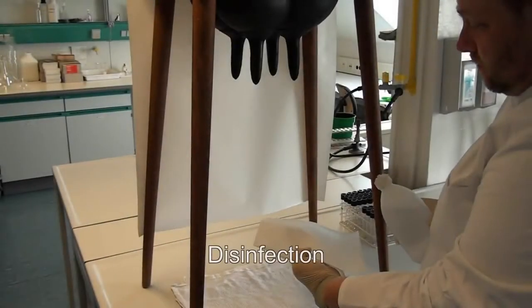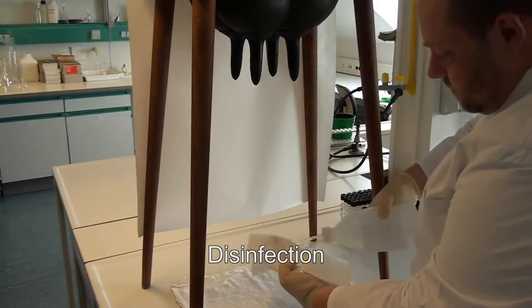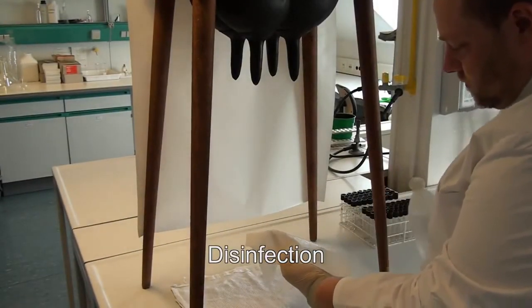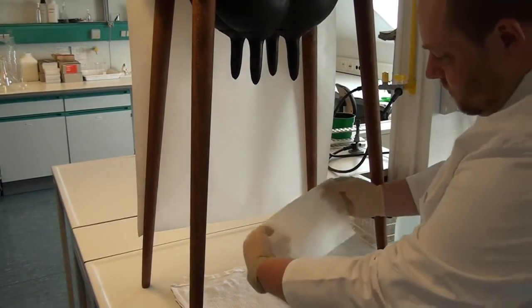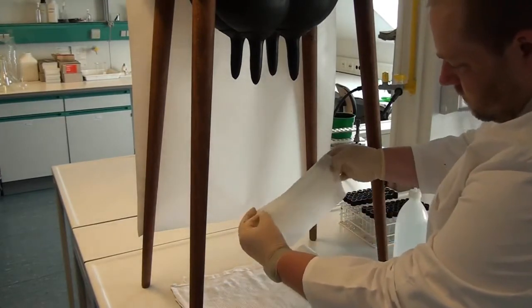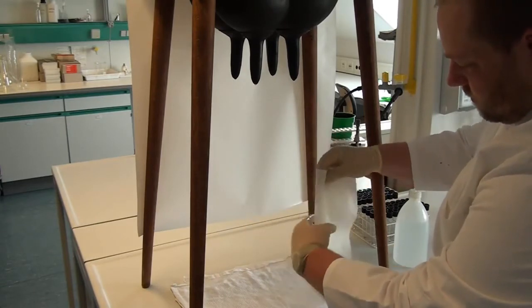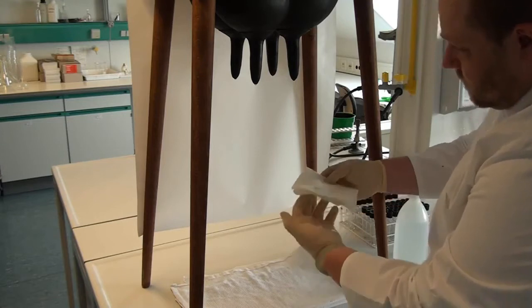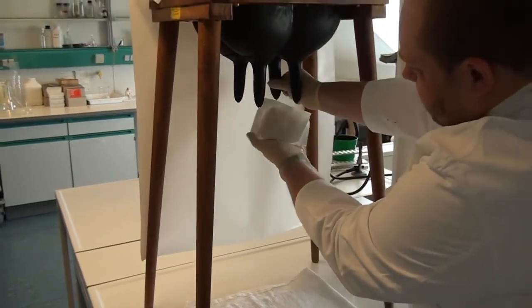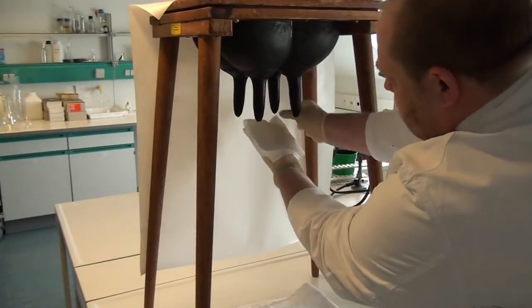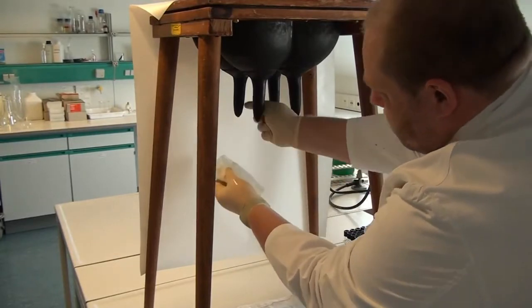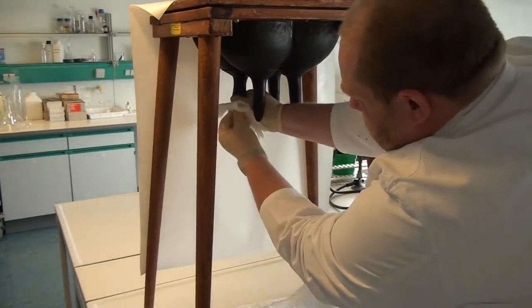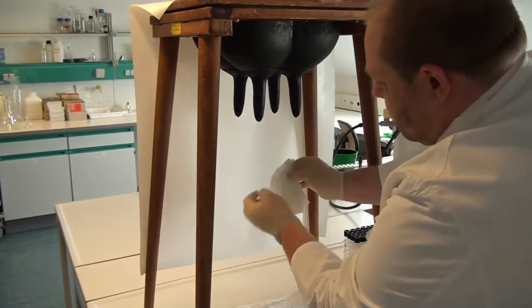By now, teats should be ready for milking, meaning that they appear plump and are thin-walled. To disinfect them, either single paper towels are used for each teat, or towels are folded in a simple way as seen here. In any case, towels must be soaked with alcohol. It is important for the operator to start disinfection with the opposing quarters in order to avoid contamination with his or her hands.